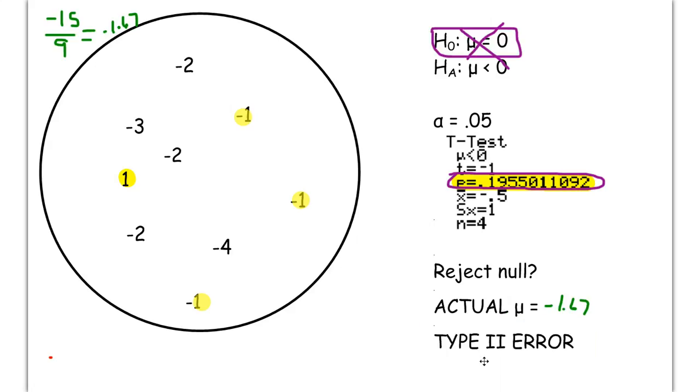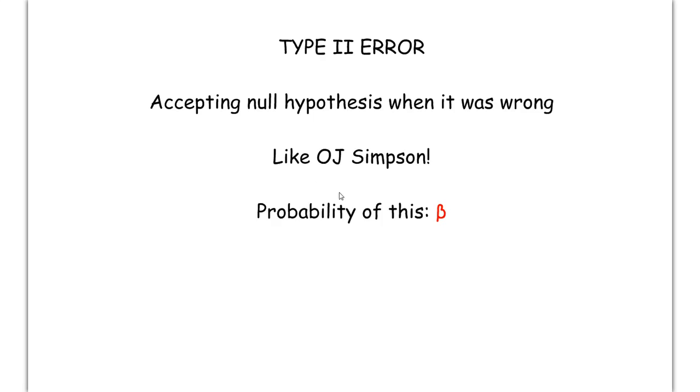So when you don't reject, but you should have, type 2 error. In the court system, that would be like letting a guilty person go free. Now, in most cases, including in court, you'll never know for sure if you were right. For example, O.J. Simpson is someone who was not convicted. He was let go. But it is widely assumed by most people that he was in fact guilty. So, if in fact he was guilty, a type 2 error would have been made by letting him go.